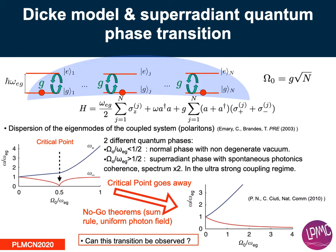The Dicke model studies N two-level systems coupled to the same photonic mode. Hagenmuller and Bhatt in 2010 calculated the polaritonic modes of such a system at T equals zero, and it exhibits a gapless critical point which separates two phases: a normal phase from the superradiant phase.